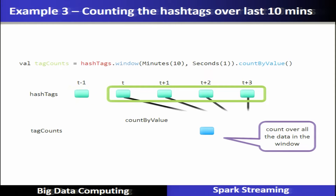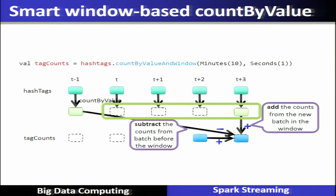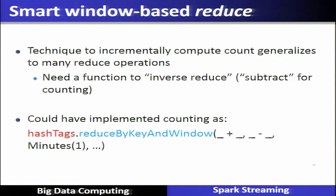When the window slides, old data exits the window and new data enters the system. The count values change accordingly. To compute the new countByValue, the previous value is subtracted and the new value is added. This concept requires a window-based algorithm for analysis.